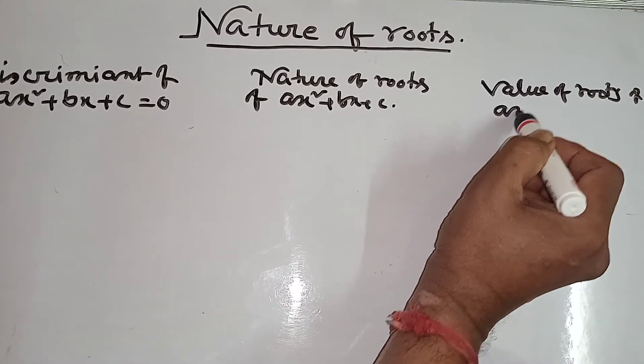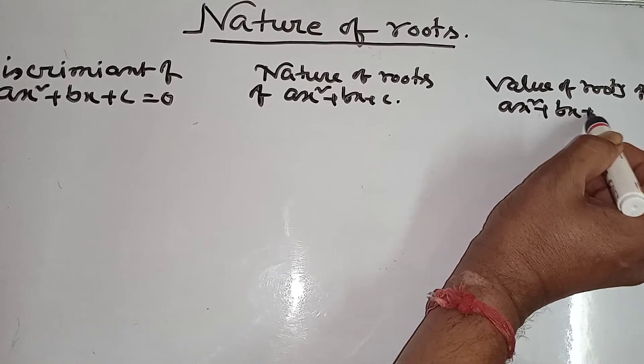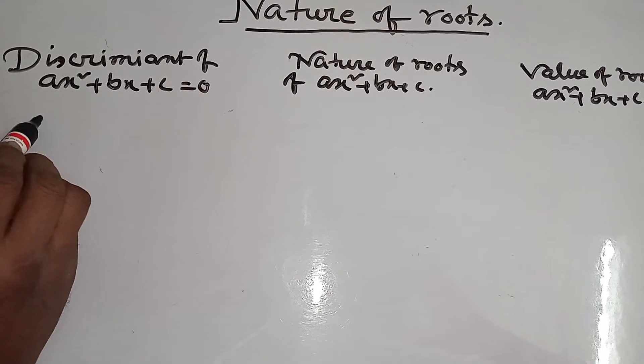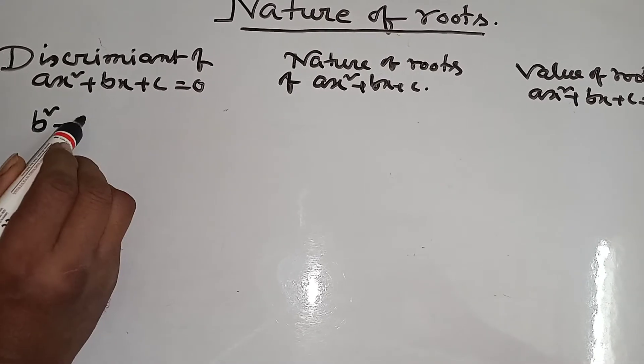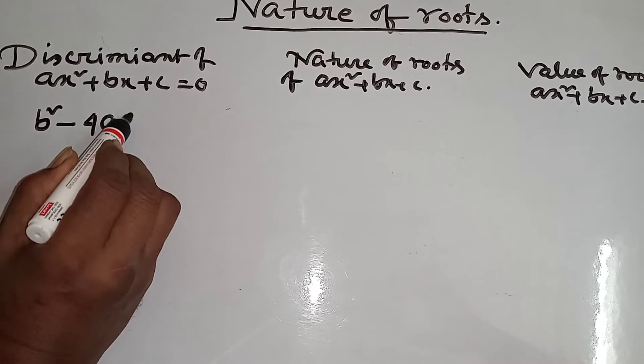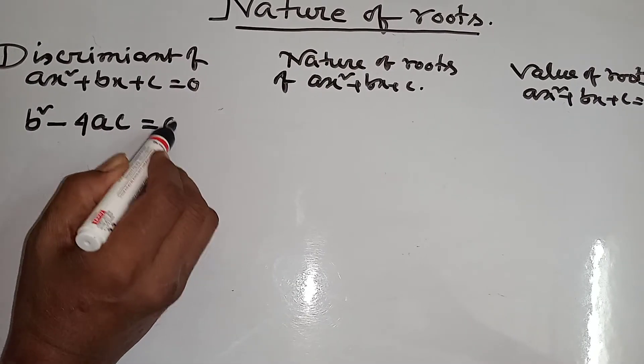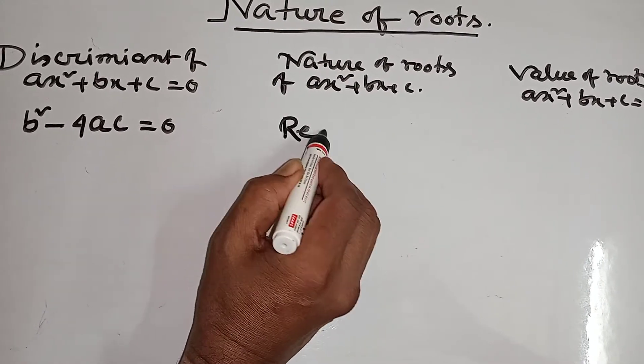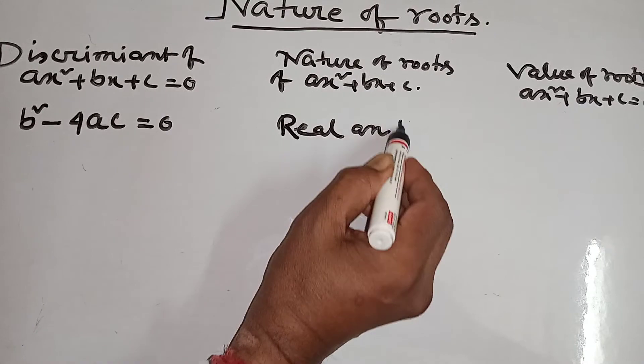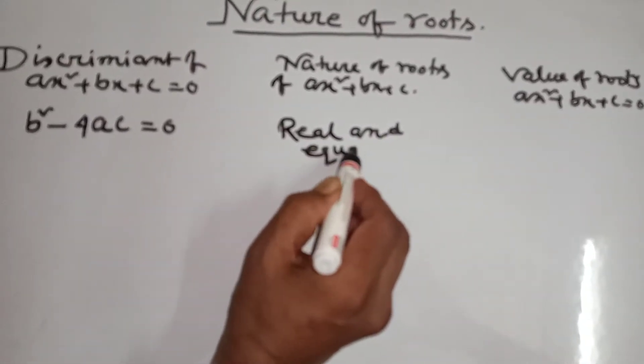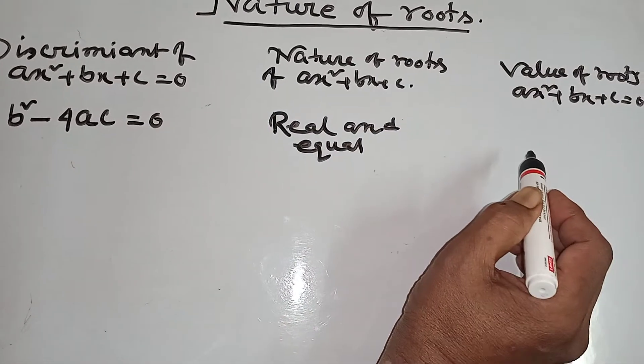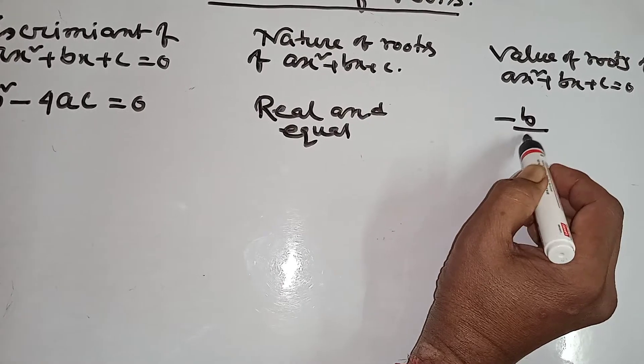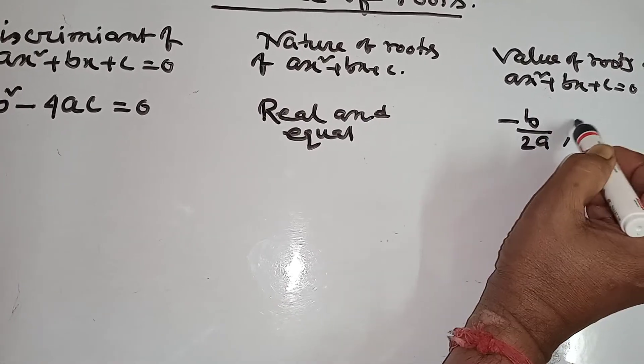For x squared plus bx plus c equal to 0, the discriminant is b squared minus 4ac. If b squared minus 4ac equals 0, then the roots will be real and equal, and the roots will be minus b by 2a comma minus b by 2a.